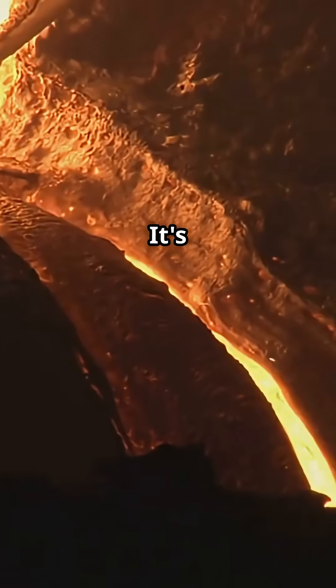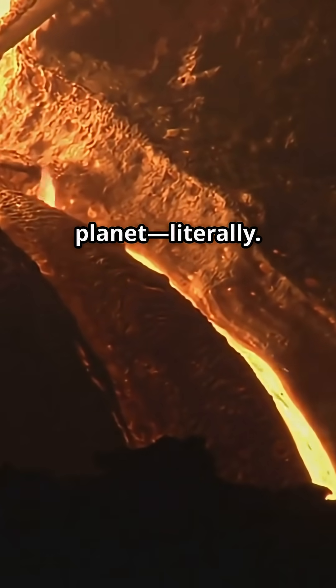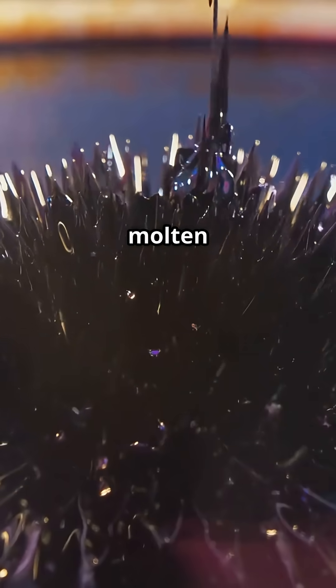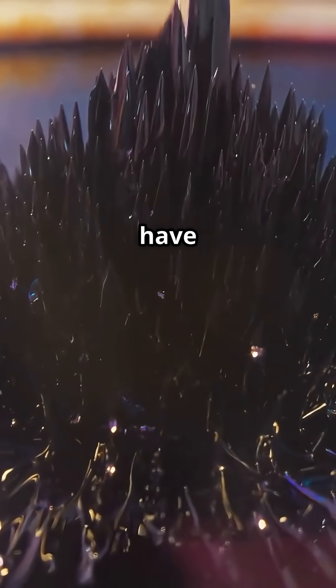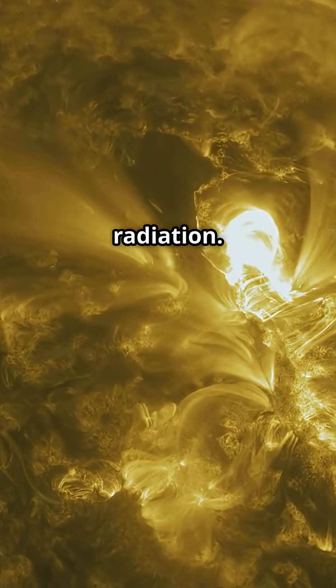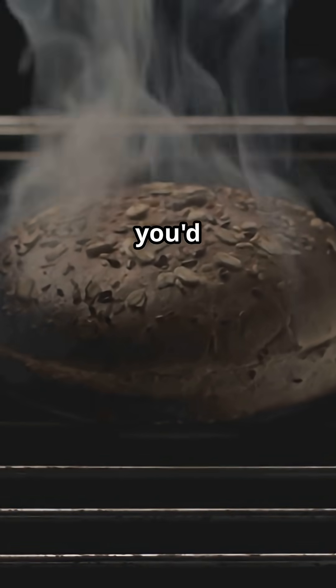Epic, right? Now, iron is everywhere on Earth. It's the core of our planet, literally. Most of Earth's iron sank to the center when our planet was still molten. That molten iron core? It's why we have a magnetic field, which basically shields us from deadly solar radiation. So without iron, you'd be toast.